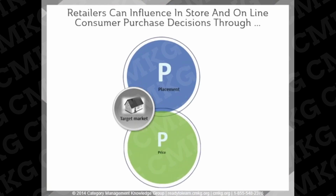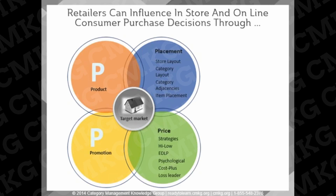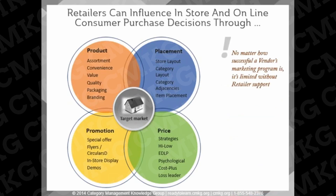The next level of influence is by the retailer through the tactics, or the four P's. These include placement, price, promotion, and product. No matter how successful a vendor's marketing program is, their results will be limited without the support of retailers. Success is driven by the category management tactics, and because more than 50% of a shopper's decisions are made in the store, we know that in-store merchandising and store layout have a profound impact on category and brand or segment results.